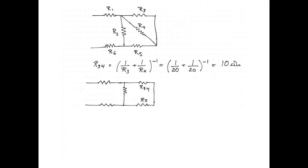And once you draw R3,4 and R5, you can see that those two are in series. So R3,4 plus R5 is simply 30 ohms. So we're going to take R3,4 and R5 and draw those together and see what the relationship is with R2.